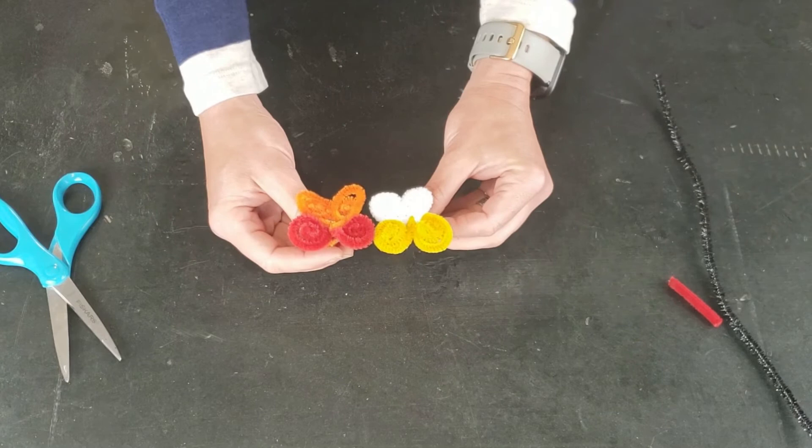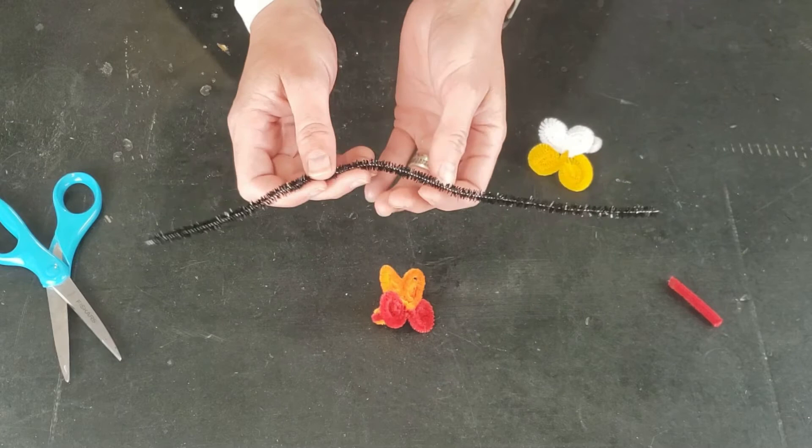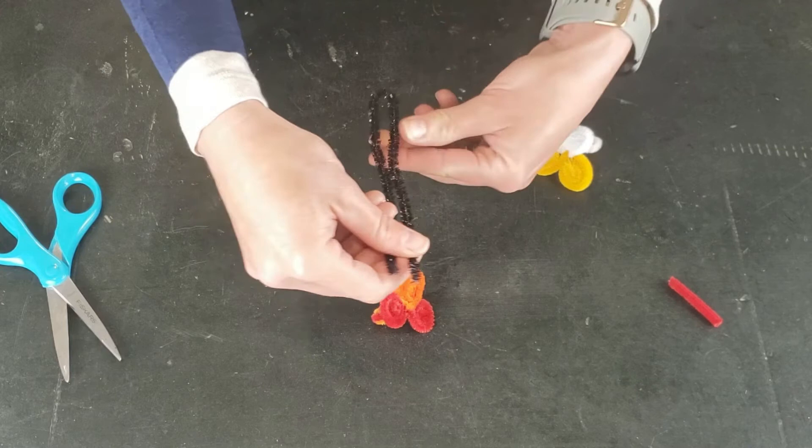And there you have your little butterfly. I've done one also in gold and white. So then to create the center, you just need to make a shorter pipe cleaner out of the neutral one, so we only need a half.